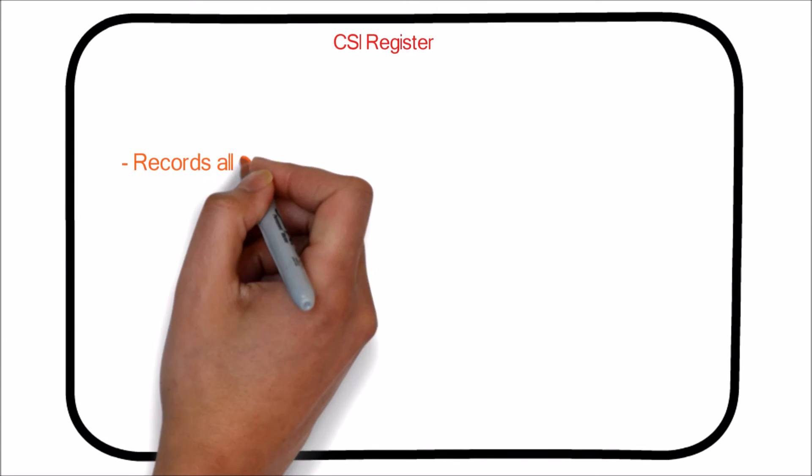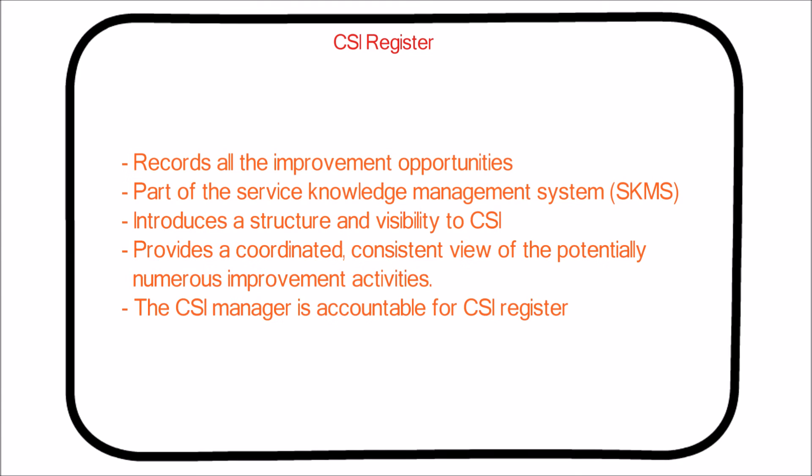The CSI Register records all improvement opportunities, and each one should be categorized into small, medium or large undertakings. The CSI Register contains important information for the overall service provider and should be held as part of the Service Knowledge Management System. It introduces structure and visibility to CSI, ensuring that all initiatives are captured, recorded, and benefits realized, providing a coordinated, consistent view of the potentially numerous improvement activities.